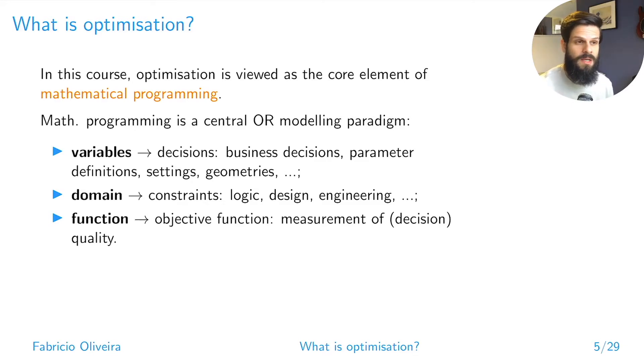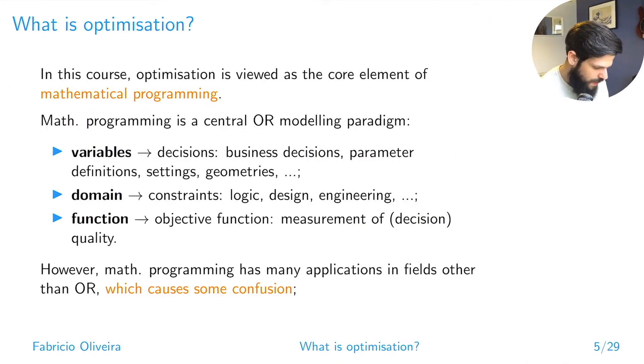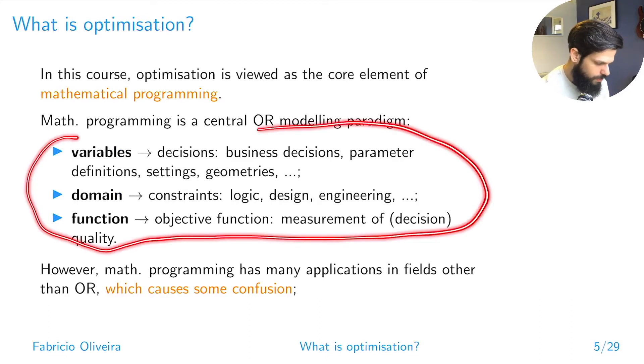It defines a domain of all possible values I can set to the variable representing the amount of product I send from A to B. The function is the objective function—the measurement of quality. That's why we call it an objective function, because it's related to measuring the quality or the objective we have to maximize or minimize that function.